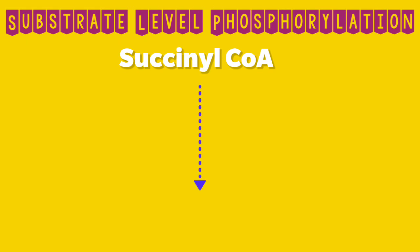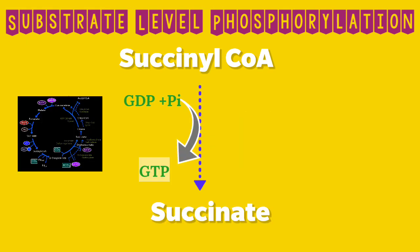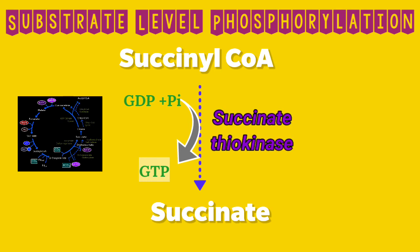The next example is the conversion of succinyl-CoA into succinate. Succinyl-CoA is a high energy compound, and during its conversion to succinate, the energy released is used to join GDP and inorganic phosphate to form GTP. So not only ATP, but GTP can also be formed by substrate level phosphorylation. This GTP may then be used for the conversion of ADP into ATP, and this reaction takes place in the TCA cycle.